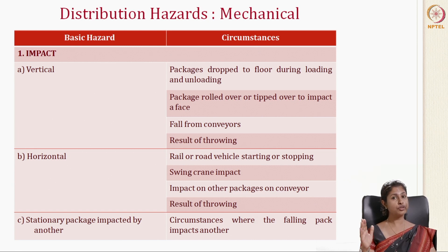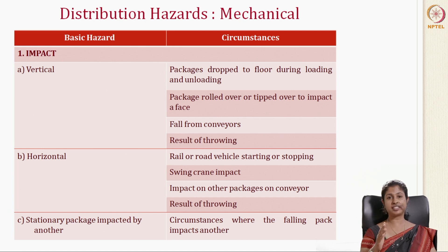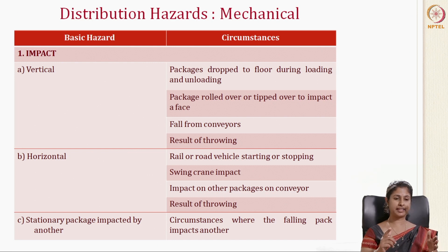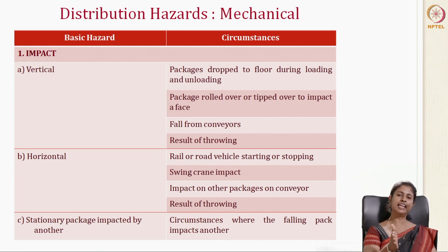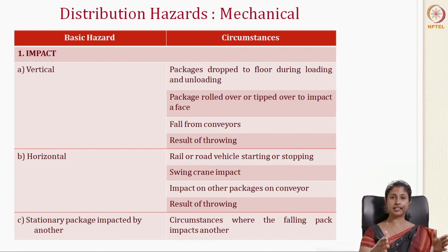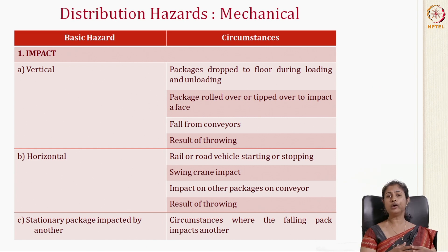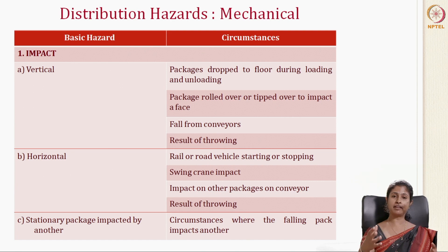Another mechanical hazard is horizontal impact. Horizontal impact can occur on a rail or road when there is a sudden stop or start, hitting horizontally onto an adjacent obstacle. A swinging crane can cause a horizontal impact while loading or unloading. Impact can also occur with another package on conveyor belts due to sudden stops or starts. Additionally, a falling pack impacting another pack is another form of impact that can happen during distribution.